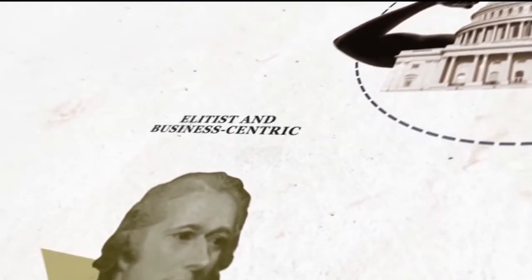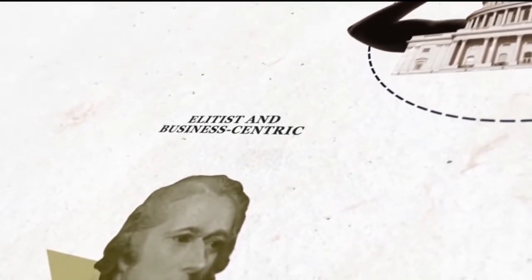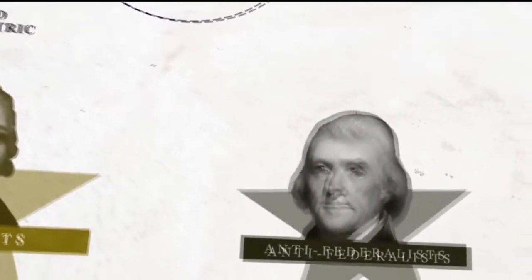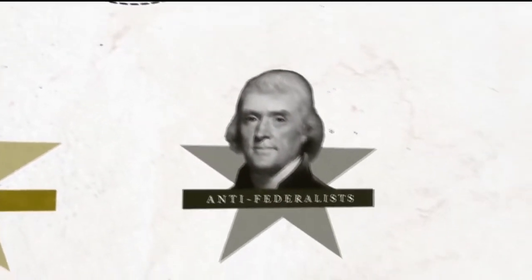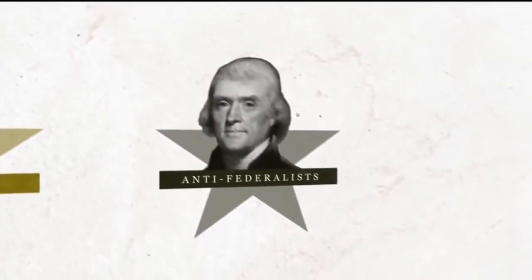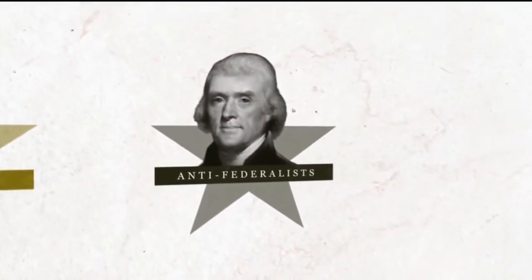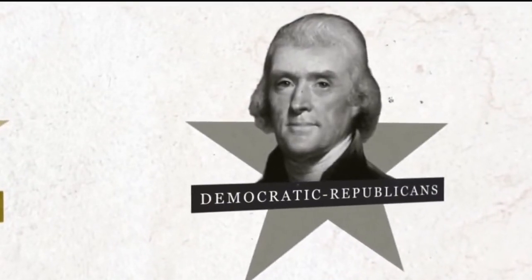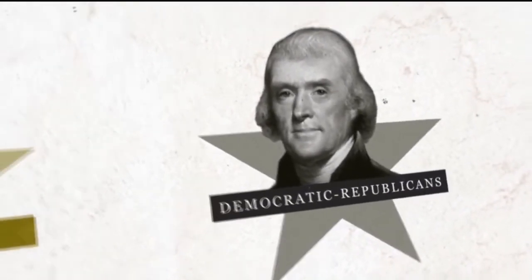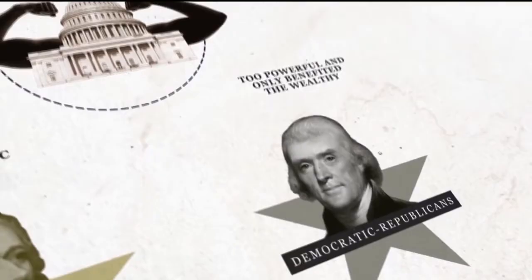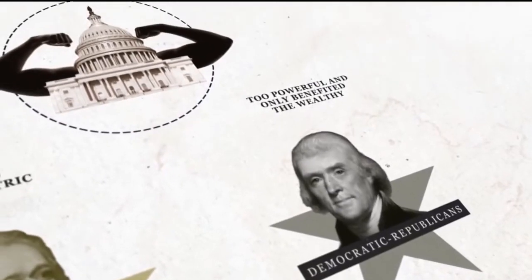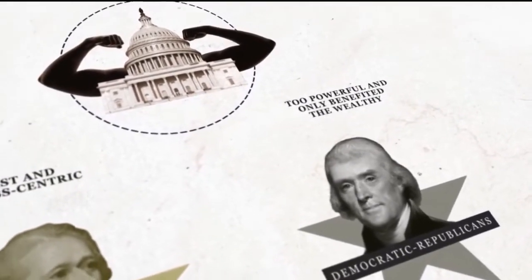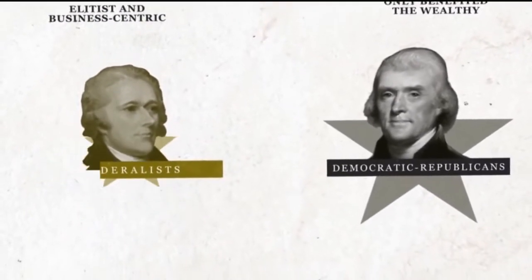But the working class went against the Federalists' elitist, business-centric ideals, and they rallied behind Thomas Jefferson to form the Anti-Federalists, later dubbed the Democratic Republicans. They believed the government was too powerful and only benefited the wealthy.